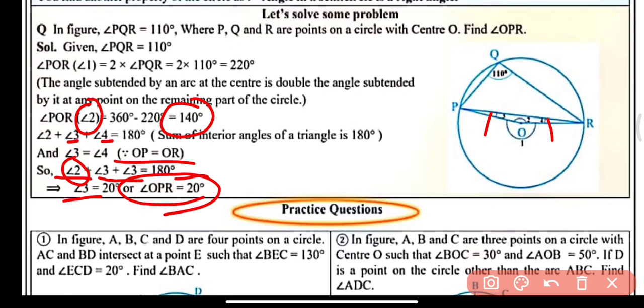Angle 3 equals 40 divided by 2, that is 20 degrees. Thus angle OPR equals 20 degrees and angle ORP will also be 20 degrees each.